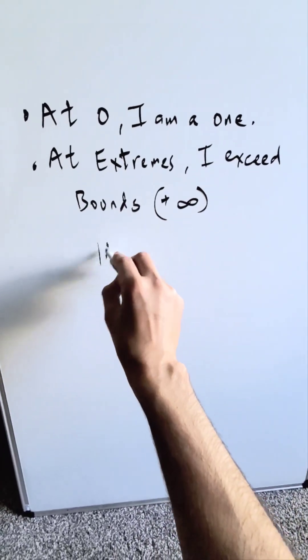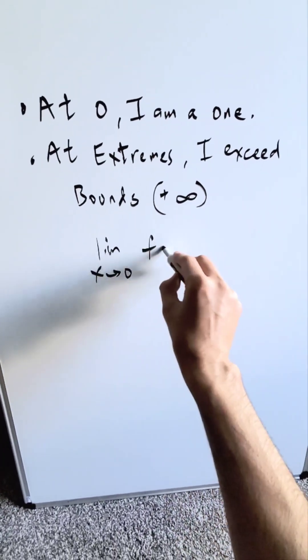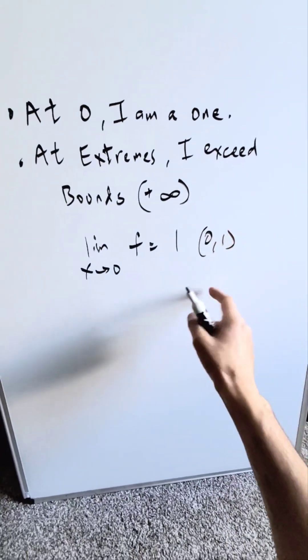Look here at clue number 1. At 0, limit as x approaches 0, your function is a 1, clearly indicating a y-intercept 0, 1.